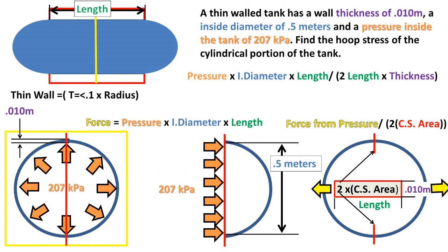Let's start simplifying the formula. The initial formula is pressure times the internal diameter times the length over two times the length times the thickness.